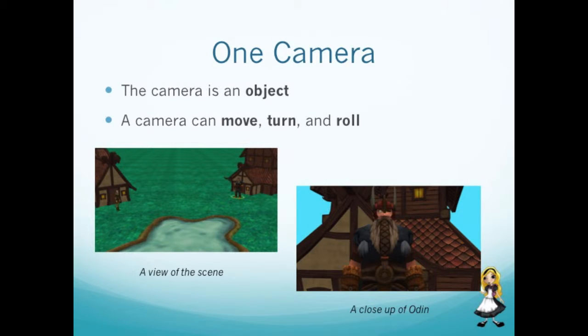Alice has only one camera in a scene. The camera is moved around and repositioned for different viewpoints. This is similar to the use of a camera in a Hollywood studio.